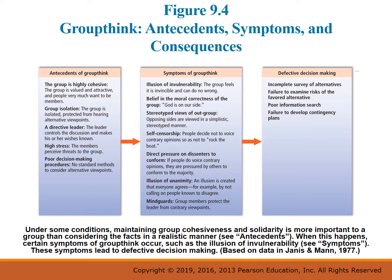An advisor named Arthur Schlesinger reported having severe doubts about the Bay of Pigs invasion but didn't express these concerns during discussions, out of fear that others would regard it as presumptuous for a college professor to take issue with heads of major government institutions. This illustrates how, if anyone voices a contrary viewpoint, the rest of the group is quick to criticize, pressuring the person to conform to the majority view — a symptom of groupthink called direct pressure on dissenters.